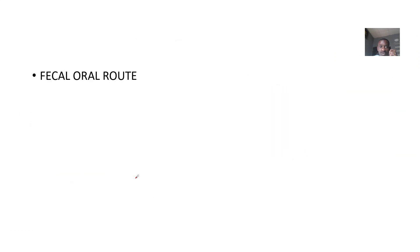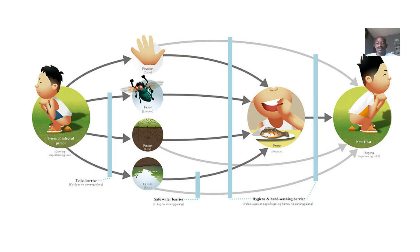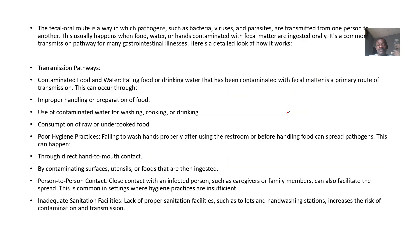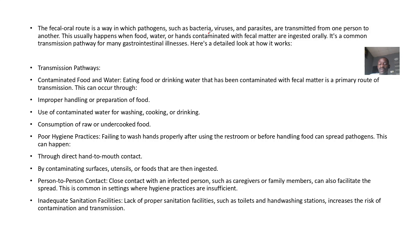If you hear the word 'fecal-oral route,' what does it actually mean? Fecal means feces, and oral means mouth. So fecal-oral route means you got an infection because you ate something contaminated with someone's feces — feces that contained eggs, parasites, or bacteria. Fecal-oral route is a way in which pathogens such as bacteria, viruses, or parasites get transmitted from one person to another.